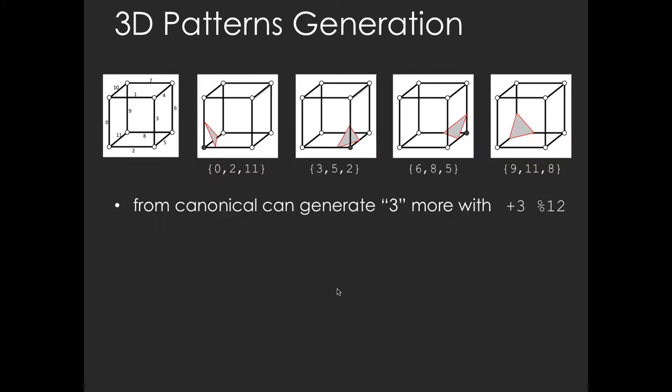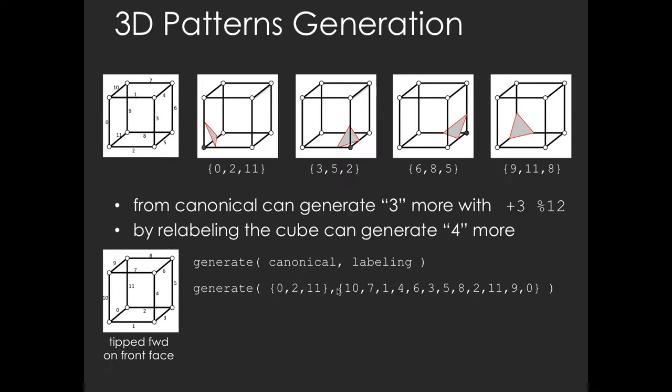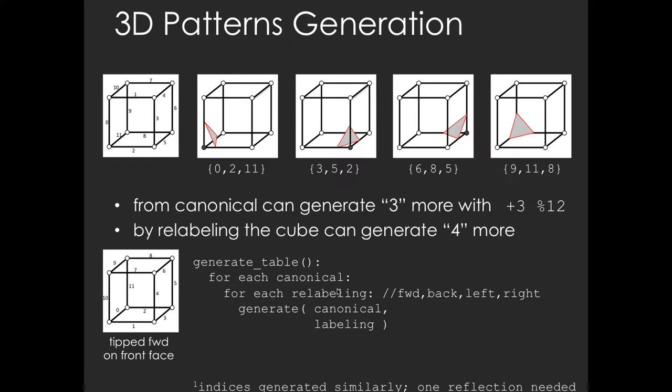The number of possible patterns in 3D precludes generation of the lookup table by hand. Here we suggest a simple way to automate the task. Given the cube labeling as shown on the far left, we can see that four equivalent patterns can be generated by a simple plus 3 rotation similar to the 2D case. A short procedure can be written to rotate each canonical configuration and generate the other three cases. Now if we consider the cube tipped forward so that it is resting on what was originally the front face, we can expand the procedure by sending the relabeling so that the indices are looked up before printing.